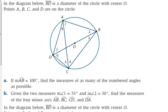Okay, so let's use that property here. We've got a little diagram. They tell us that BD is a diameter of the circle with center O. A, B, C, and D are on the circle. In part A, they tell us that the measure of arc AB, from point A to point B along the circle, that arc has a measure of 100 degrees. And they ask us to find the measures of as many of the numbered angles as possible.